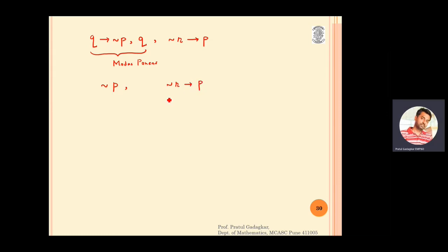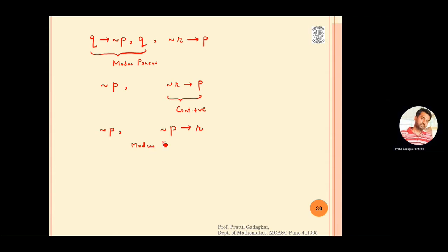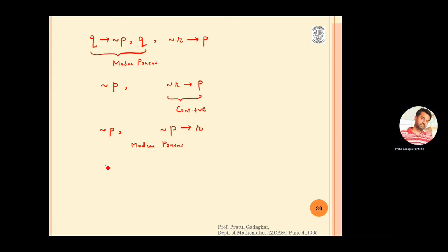Taking the contrapositive of negation r implies p gives negation p implies r. Then by modus ponens again, negation p combined with negation p implies r gives r. This is exactly what we wanted to prove, so the given argument is valid.